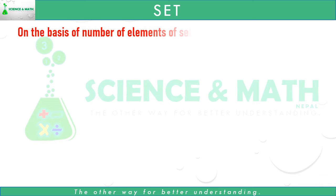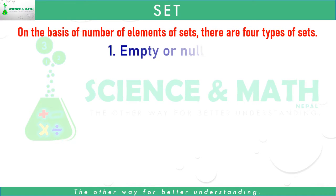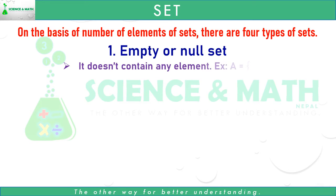On the basis of number of elements of sets, there are four types of sets. Number one: empty or null set. Empty or null set does not contain any element. It is written as A equals open curly bracket and close curly bracket.